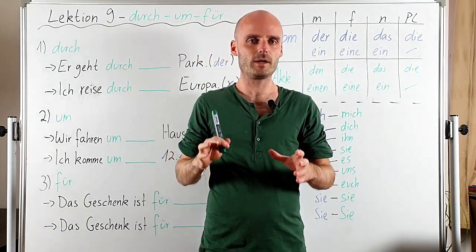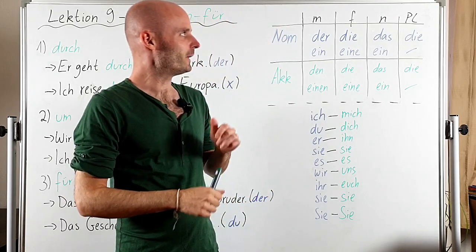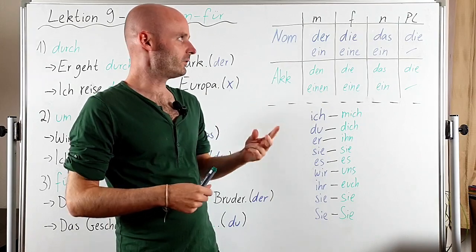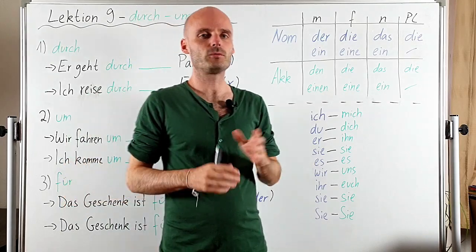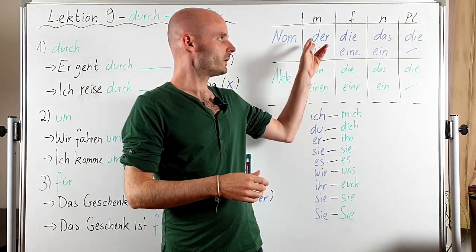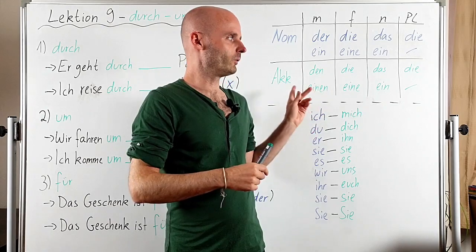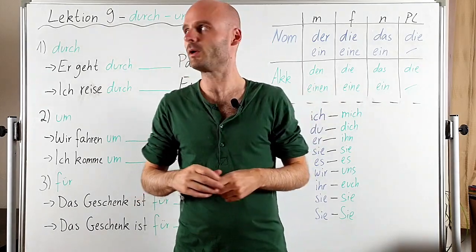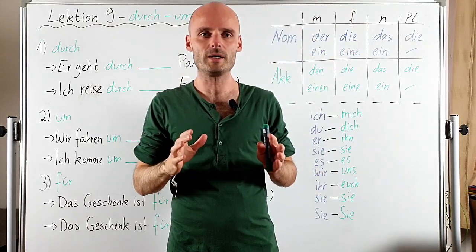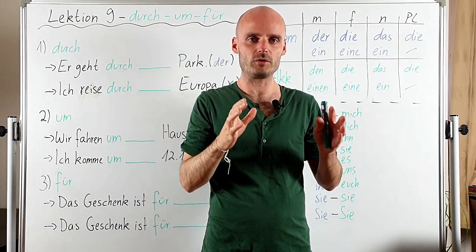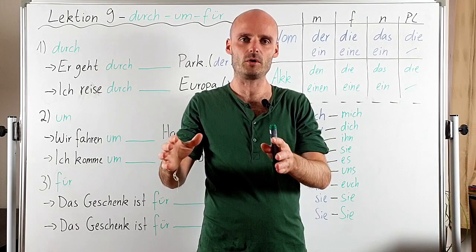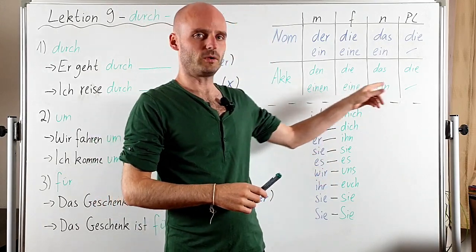I hope you already understand the case system — it's always a topic how this actually works in German. There are two options why we use cases: nominative, accusative, and dative. The first one is the verb — for example, the verb 'helfen' goes with dative, 'to be' goes with nominative, 'to see' goes with accusative. The second option are prepositions. Here we have our first three prepositions that require the object that follows them to be in a specific case.